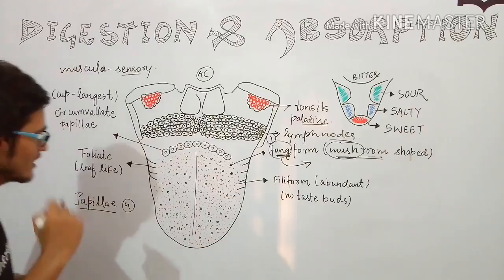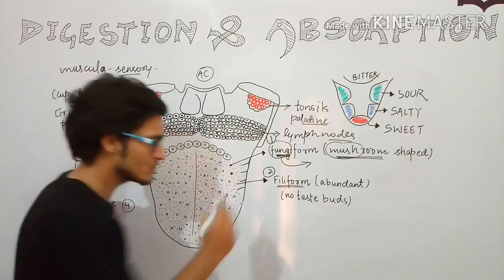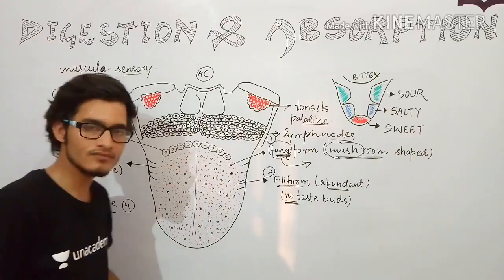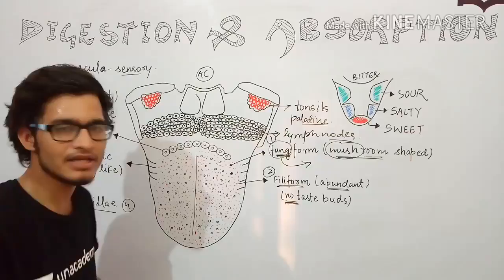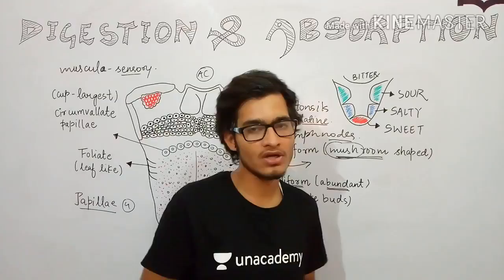The second type is filiform papillae, which are the most abundant in the tongue. The red dots visible here are filiform papillae — they are the most abundant ones. However, filiform papillae do not have any kind of taste buds. So fungiform papillae are mushroom shaped and have taste buds, while filiform are the most abundant but have no taste buds.